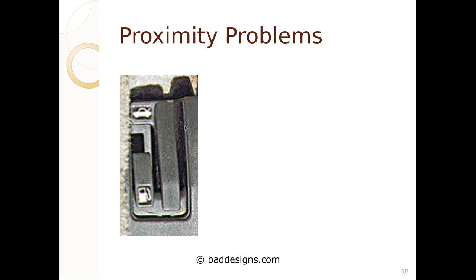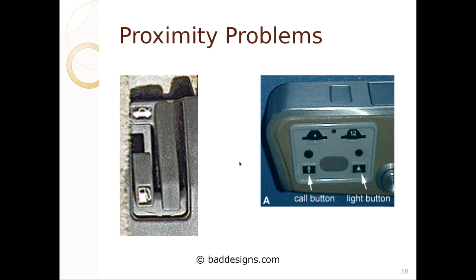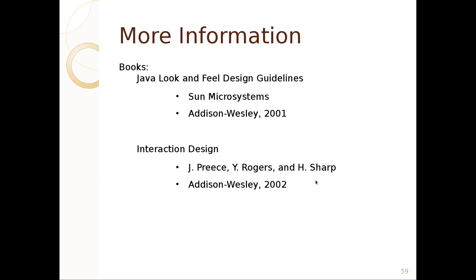There are also issues of proximity: an icon in a car might make you pull the gas release when you meant to open the trunk, or vice versa. On airplanes, accidentally clicking the call button instead of the light button is common because they look and feel the same and are hard to distinguish in the dark.